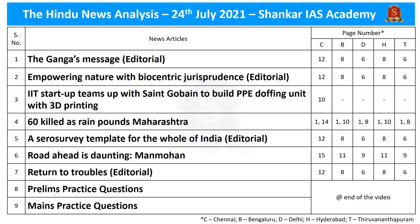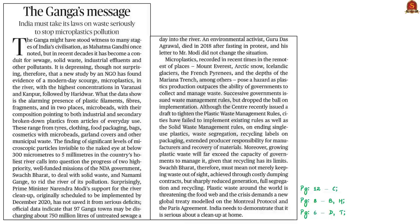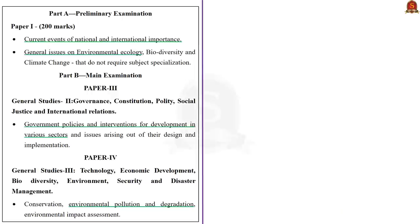Let us move to the discussion of our first news article, which is based on an editorial about microplastic pollution in river Ganga. A new study has found that Ganga is heavily polluted by microplastics. The highest concentrations of microplastic pollution were found in Varanasi and Kanpur, followed by Haridwar. In this context, let us discuss microplastics, then the plastic waste management rules, and finally the reasons behind microplastic pollution in river Ganga.